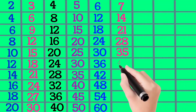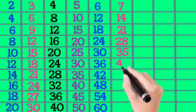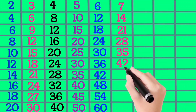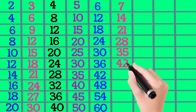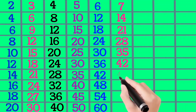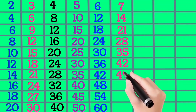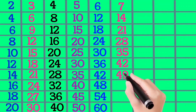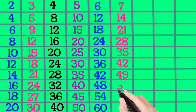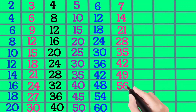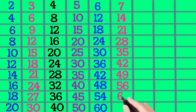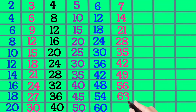7×6 is 42, 7×7 is 49, 7×8 is 56, 7×9 is 63, 7×10 is 70.